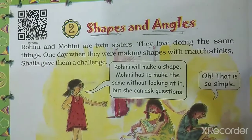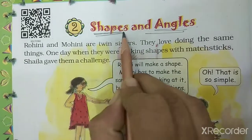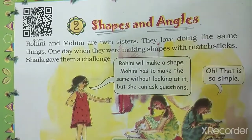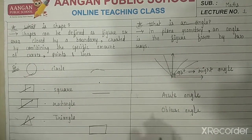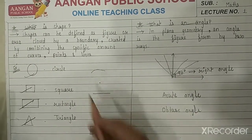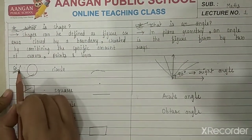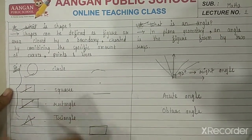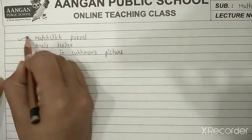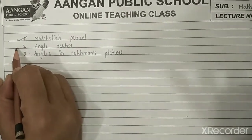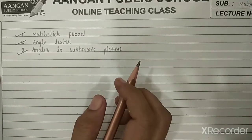Hello students, let's start with Part 2 of Chapter number 2, Shapes and Angles of Class 5th. In a previous lecture, we have discussed about what are shapes, angles and different types of shapes. Now, what we will be studying in this part: Mastic puzzle, how to make an angle tester, and find angles in Sukhman's picture.